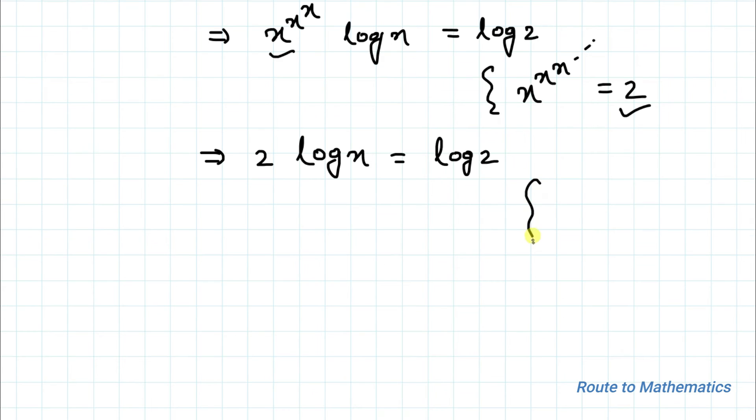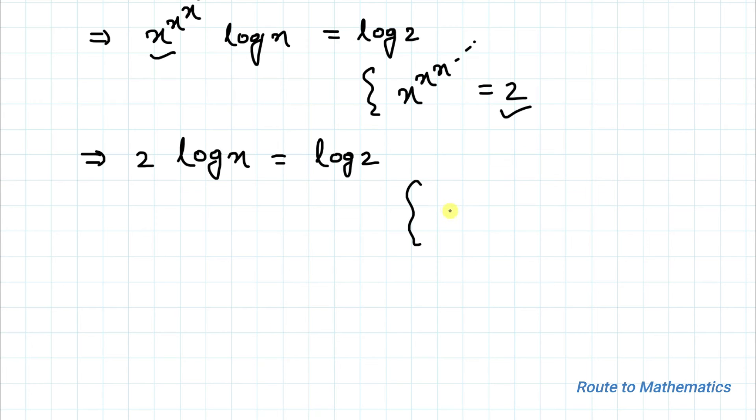Again applying the exponential power rule, that is n log k can be written as log k to the power n. By applying this, we can write log x squared equals to log 2. Now canceling log both sides of the equation, we have x squared equals to 2.